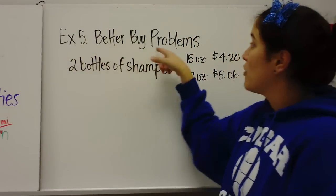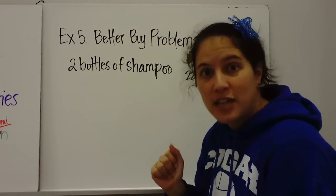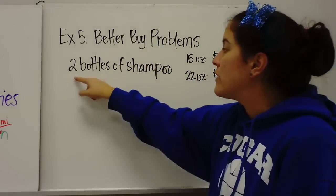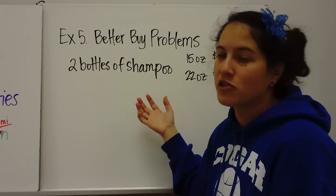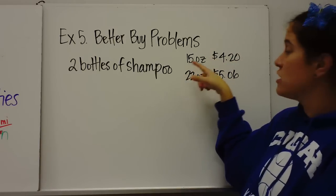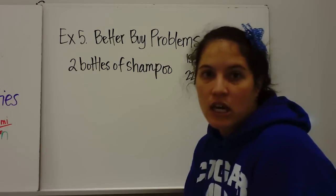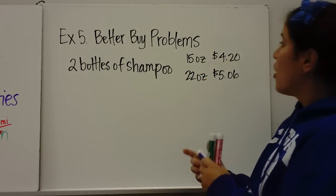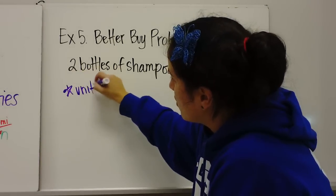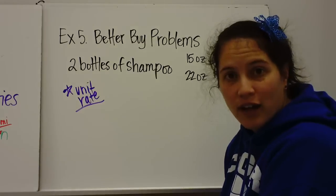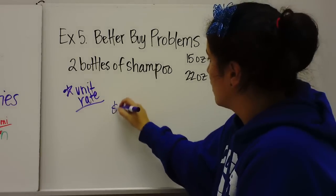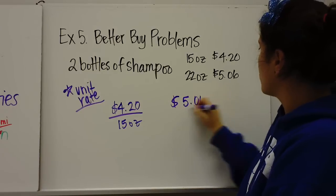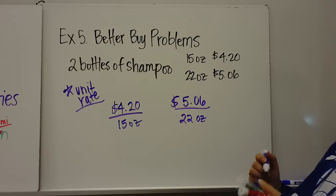Alright, so. Example 5. These are better buy problems. Better buy. I like these problems. And your mom and dad will appreciate it if you can help them go shopping and get the better buy. So we have 2 options, 2 bottles of shampoo. Everybody needs shampoo because we all wash our hair, hopefully. And we can either get 15 ounces for $4.20 or we can get 22 ounces for $5.06. So my question to you is which one is a better deal? Which one do you get more for your money? So let me show you how to find that out. We need to find the unit rate. And it's better to put your money on top.